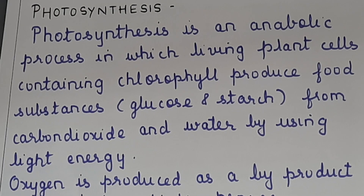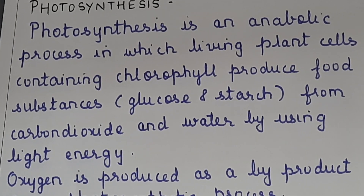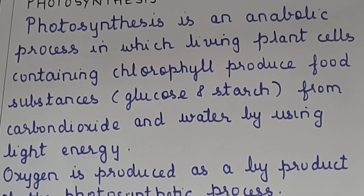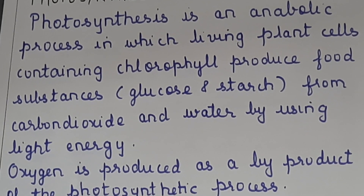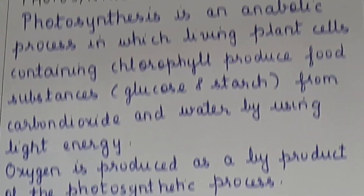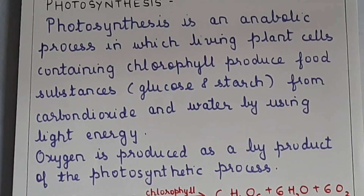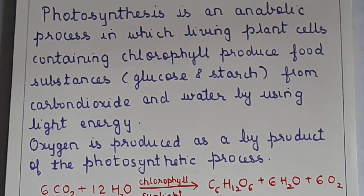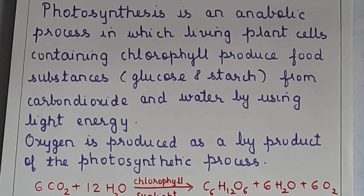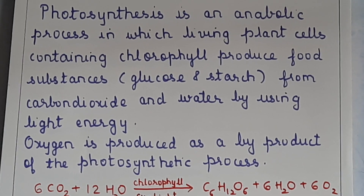Photosynthesis is an anabolic — meaning constructive — process, unlike respiration which is catabolic breakdown. Photosynthesis is an anabolic process in which living plant cells containing chlorophyll produce food substances in the form of glucose and starch from carbon dioxide and water in presence of sunlight.